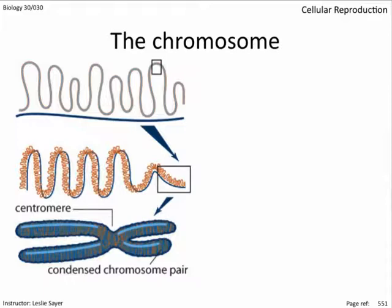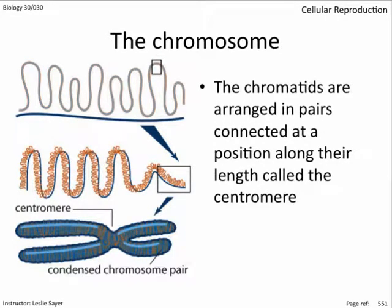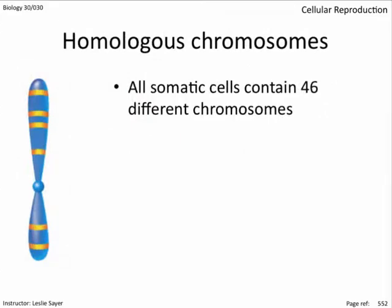The chromatin super-coils into short, thick, stubby structures called chromatids. Each chromatid has an identical chromatid because of DNA replication. The two chromatids are joined at a special region called the centromere. So prior to cell division, the chromatin replicates, then super-coils into short thick structures called chromatids, arranged in pairs connected at a position along their length called the centromere.